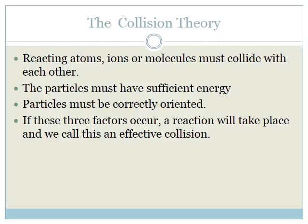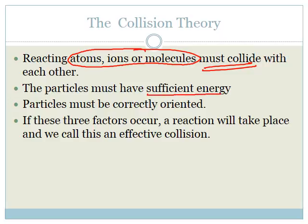So in order for there to be a reaction, we need three things to happen. One, the particles — whether they be atoms, ions, or molecules — they must collide. Two, they must have sufficient energy. And three, they must be correctly oriented. And if all three of these things occur, then we have what is called an effective collision. That's important because reactions don't occur unless you have what is called an effective collision.